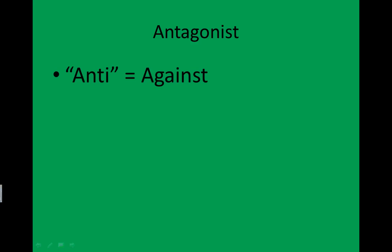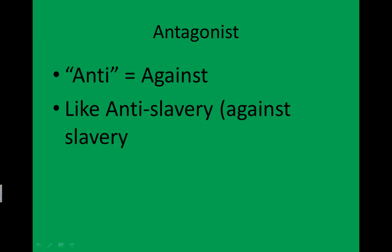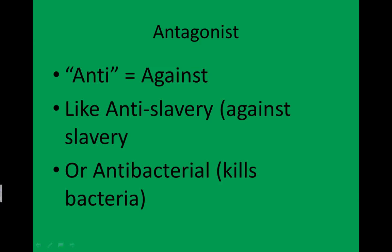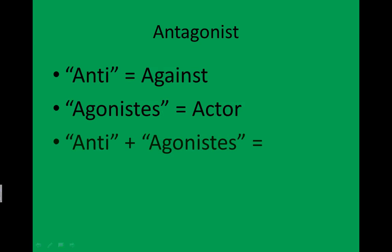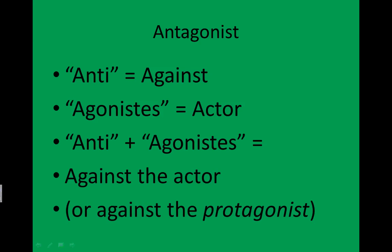Antagonist: anti means against. For example, anti-slavery means against slavery, or anti-bacterial is something that kills bacteria. So anti is against. If you combine anti, meaning against, and agonistis, meaning actor, you get against the actor. So antagonist — anti-agonistis — means against the character, or against the protagonist.